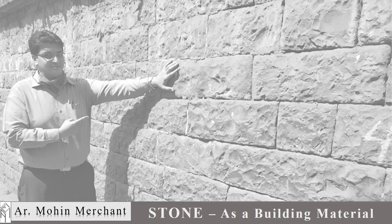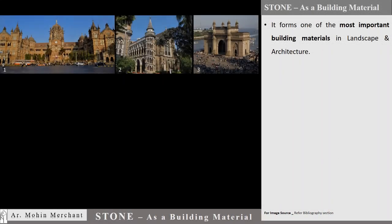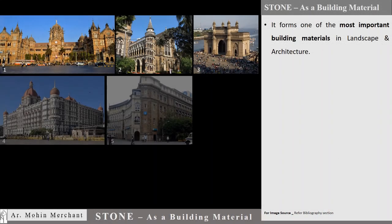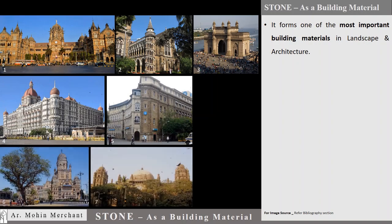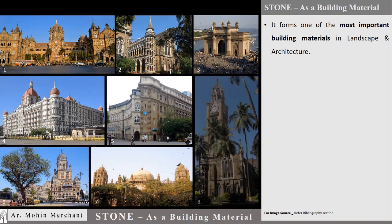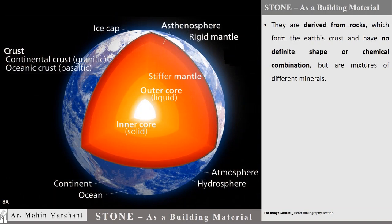Hi friends. Today we will study about stone as a building material. It forms one of the most important building materials in landscape and architecture. Stones are derived from rocks, which form the Earth's crust and have no definite shape or chemical combination, but are mixtures of different minerals.